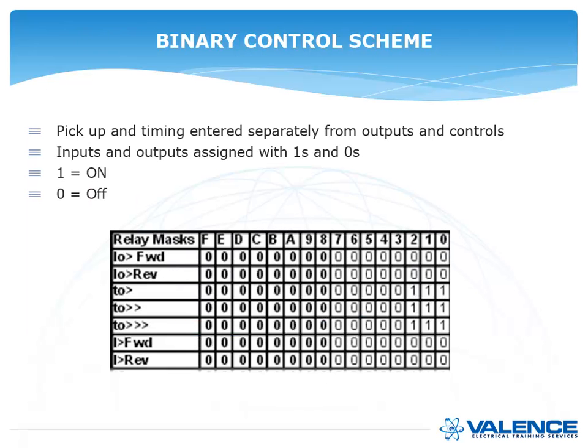A binary control scheme basically has a little chart with 0s and 1s. So the pickup and timing is entered in a completely different box from the outputs and controls. And then the inputs and outputs are assigned with 1s and 0s, where 1 equals on and 0 equals off.